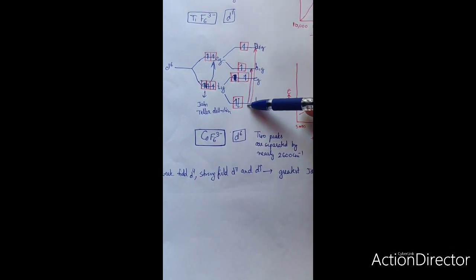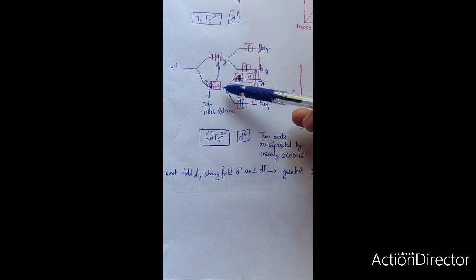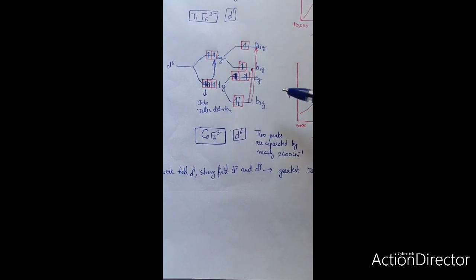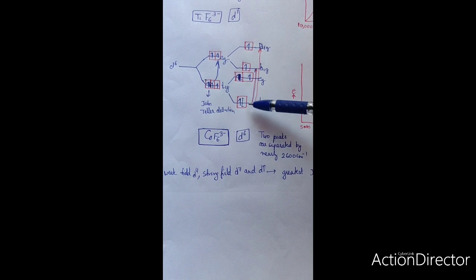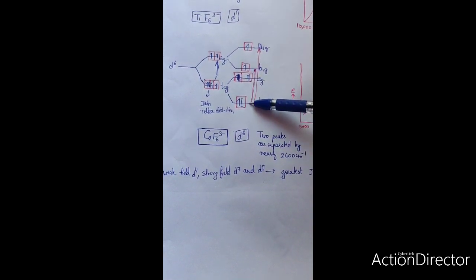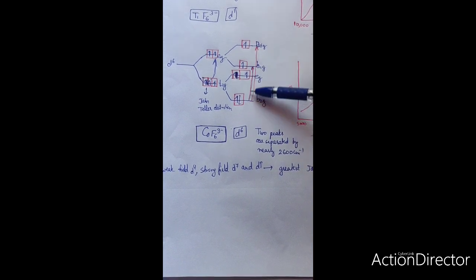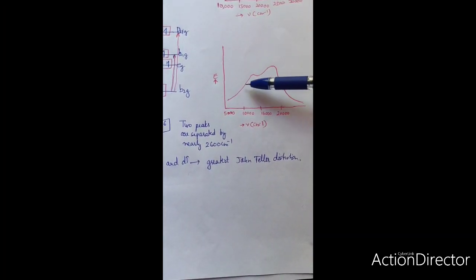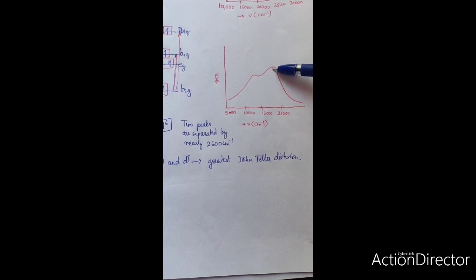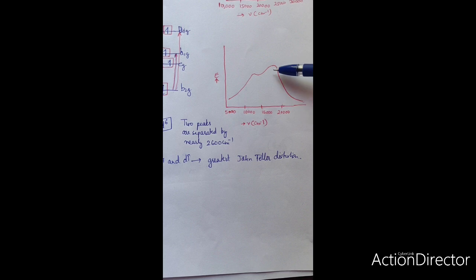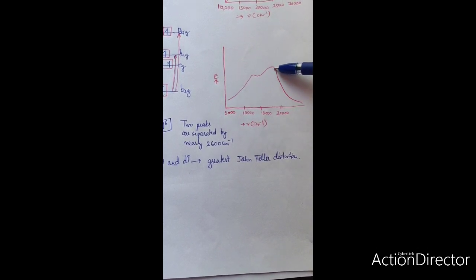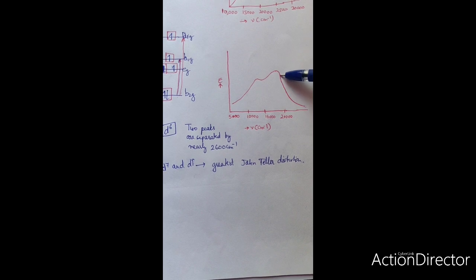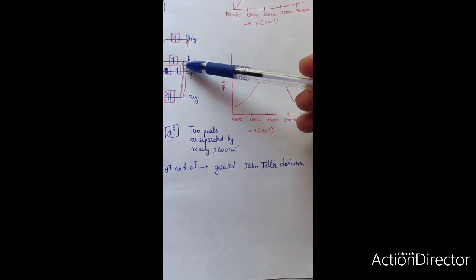There are now two apparent transitions. Instead of one peak appearing in the spectrum, due to this splitting from Jahn-Teller distortion, there can be two transitions. Due to these two transitions, we can see a hump — one main peak and another shoulder peak. So we find a broad peak instead of a sharp peak, and it appears that there are two peaks in the spectrum.